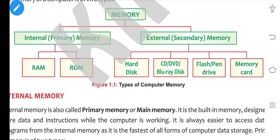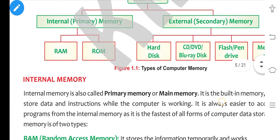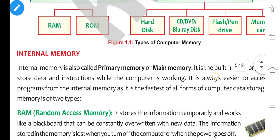The storage devices we use — hard disk, CD, DVD, flash drive, memory card — all of these are used to store any type of data, and they are all called external or secondary memory.